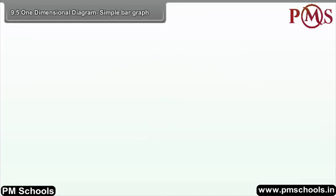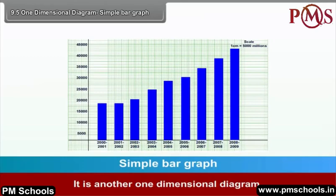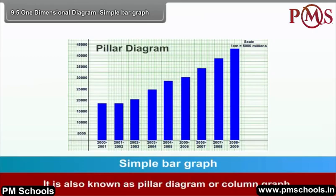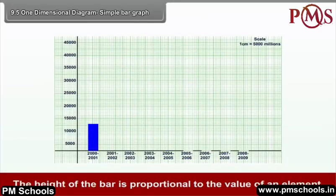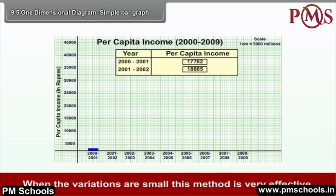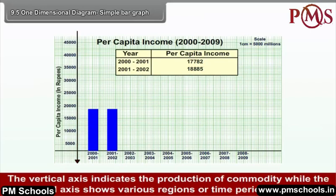Simple Bar Graph. It is another one-dimensional diagram, also known as a pillar diagram or column graph. The height of the bar is proportional to the value of an element. When the variations are small, this method is very effective. The vertical axis indicates production of a commodity while the horizontal axis shows various regions or time period.